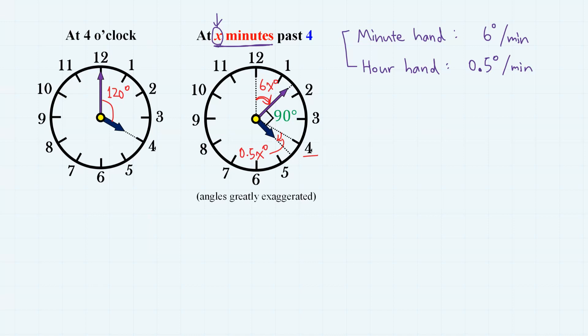Therefore, by simple geometry, we have the following relation between angles. First, this angle 120 degrees, then add this angle 0.5x degrees. And if we subtract this angle 6x degrees, then we have 90 degrees. Therefore, we have a simple linear equation 120 minus 5.5x equals 90. So 30 equals 5.5x.